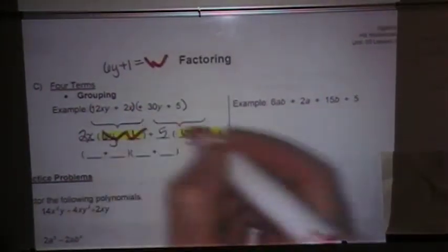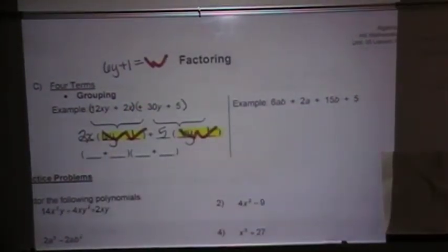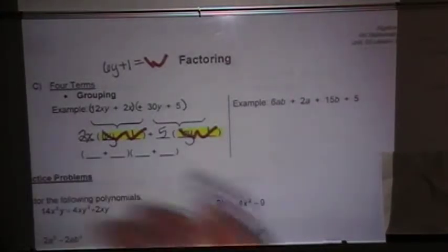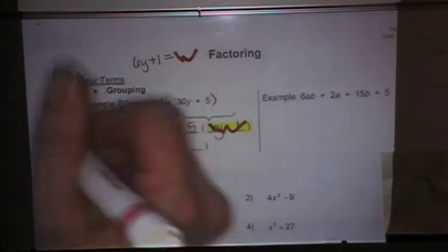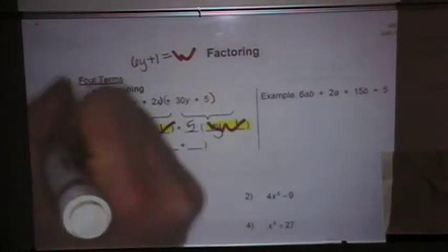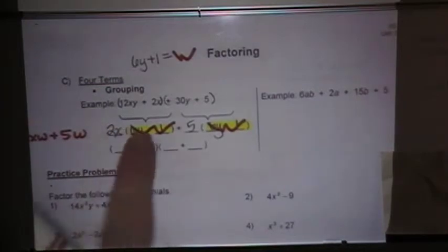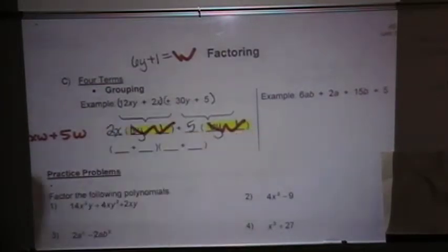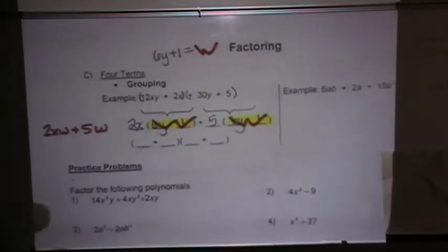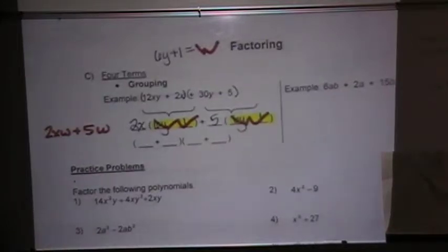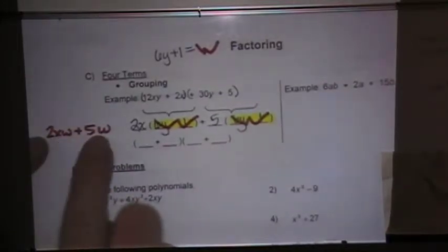So I'm going to make both of these big fat w's. Which means I can rewrite this problem as 2xw plus 5w. That's 2x, now w, plus 5w.